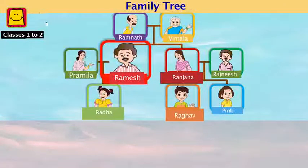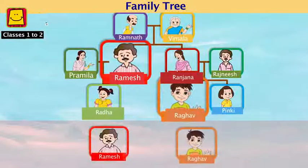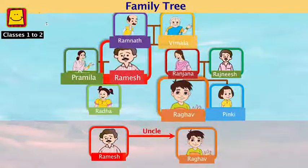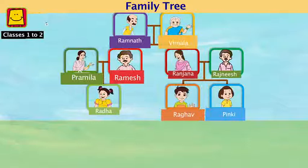Now another question. He is Ramesh and this is Radha — so what's the relation between Ramesh and Radha? Ramesh's sister is Ranjana, and Ranjana's son is Raghav, so sister's son means Ramesh is Raghav's maternal uncle. And how is Radha related to Ramesh? She is his niece. So that was the uncle-niece pair.